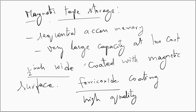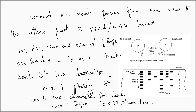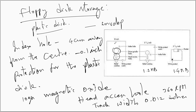Magnetic tape storage is a sequential access memory with very large capacity at low cost. It consists of a half-inch wide plastic tape coated with a magnetic surface — typically ferric oxide. There are two reels and the tape typically has seven tracks: six for data storage and one parity bit. Magnetic tape comes in different lengths: 200, 600, 1200, and 2400 feet. Floppy disk storage stores data on a plastic disk kept in an envelope. The envelope has an index hole about four centimeters from the center, with a size of about 0.1 inch in diameter. The plastic disk thickness is about 100 micrometers and is coated with magnetic oxide.